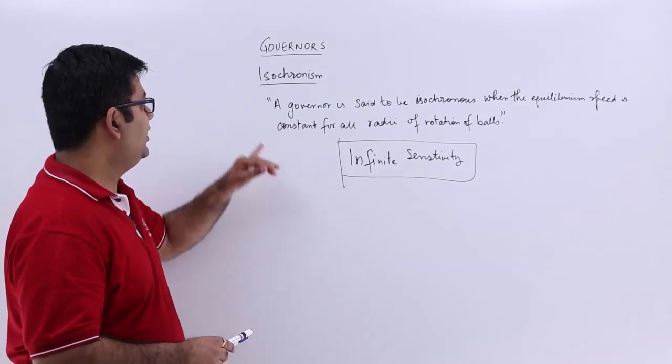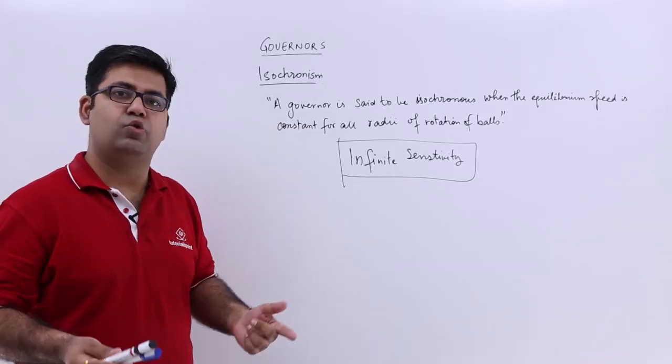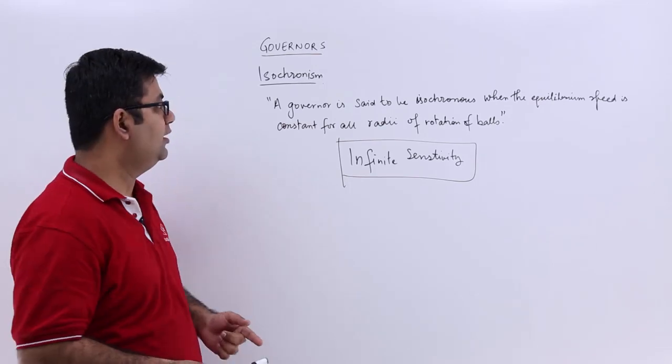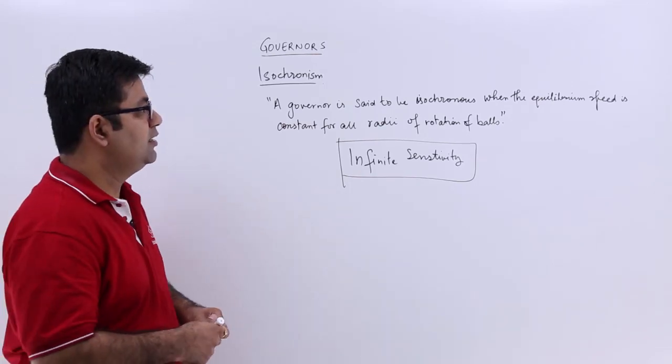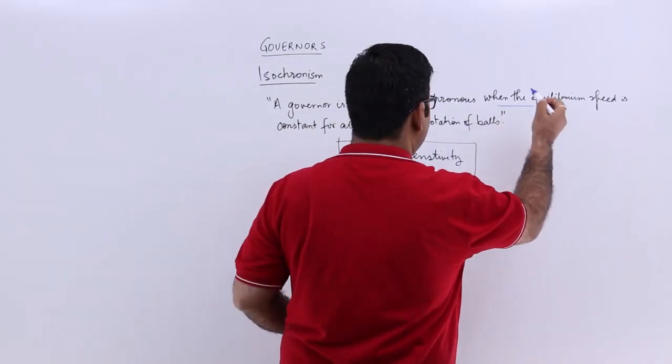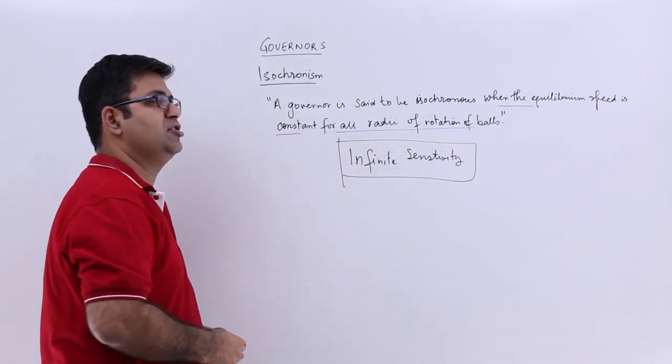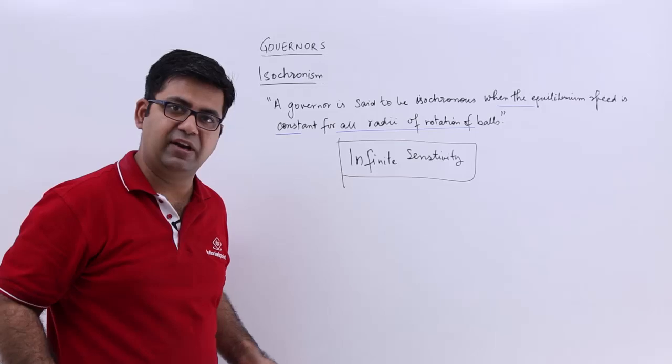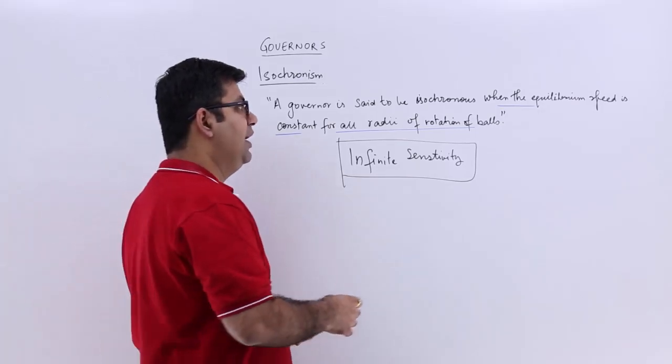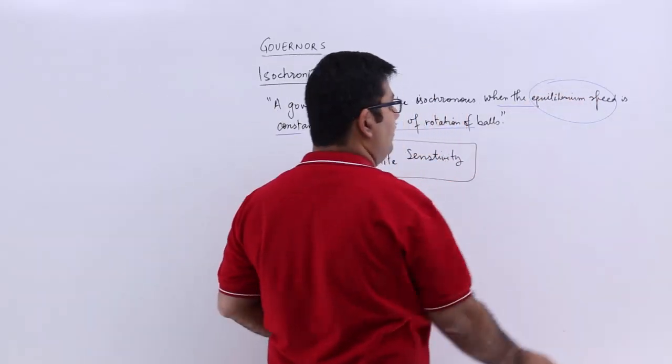Now let's look at isochronism. Isochronism is a property of a governor which says that the equilibrium speed is constant for all the radii of rotation of balls. So whatever radii of rotation you have, you will have the same equilibrium speed.